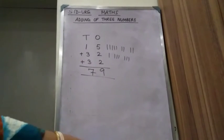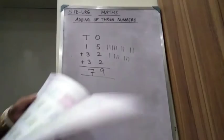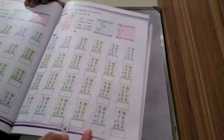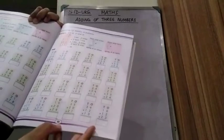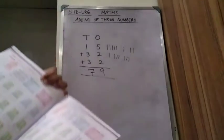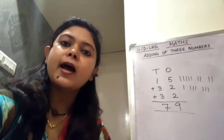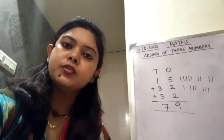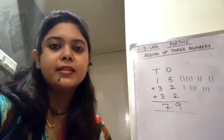Like this, you have to complete page number 95 — the rest of the questions. Addition of three numbers — don't forget to do your work. That's all for today. Have a nice day, all of you, and take care.